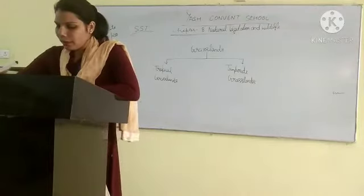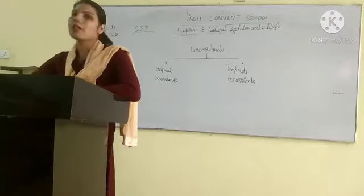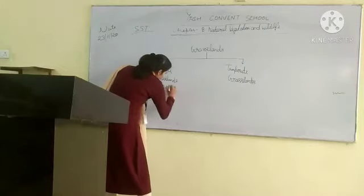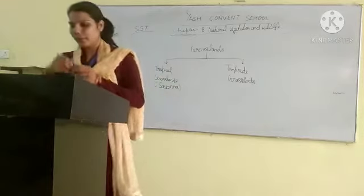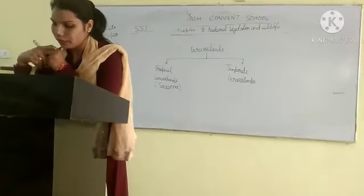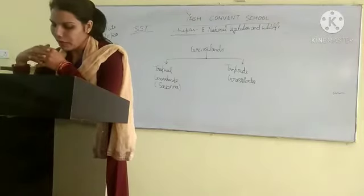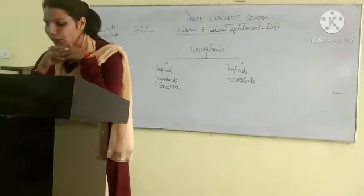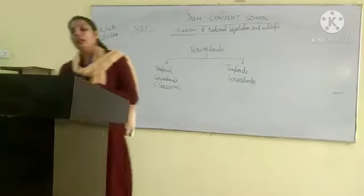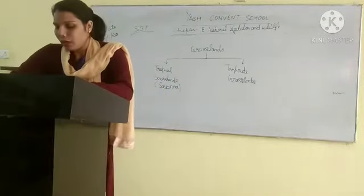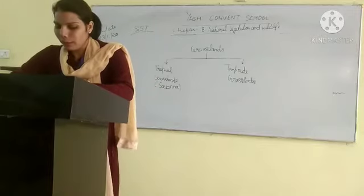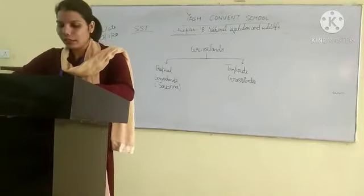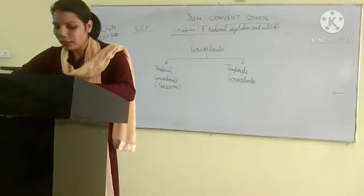First is tropical grasslands. Tropical grasslands are called Savannah. These are found on either side of the equator — in parts of Brazil, parts of India, and Northern Australia. These tropical grasslands are known by different names in different parts of the world.